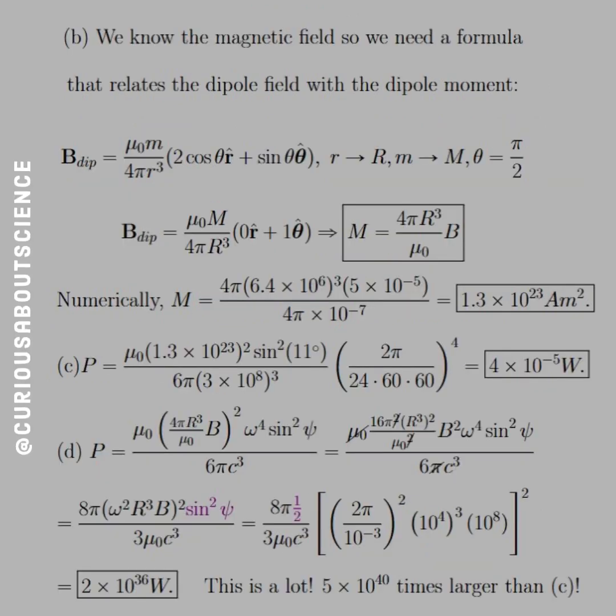All right, so part B, we know the magnetic field in terms of its value at half a gauss, so we need the formula that relates the dipole field with the dipole moment. Reason why is because if we can write the dipole moment in terms of the field, then we already know what the field strength is, so now we can know what the dipole moment strength is.